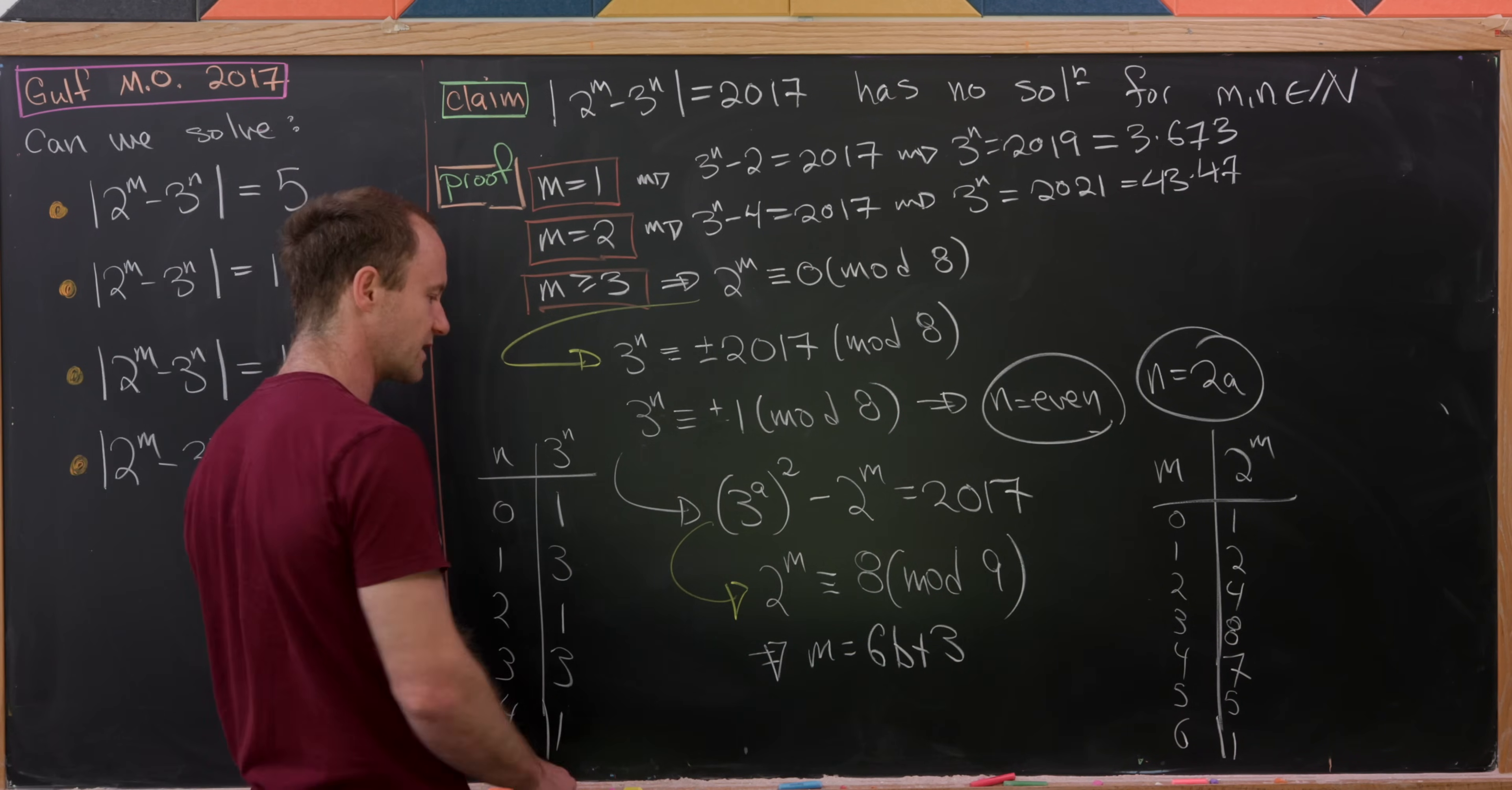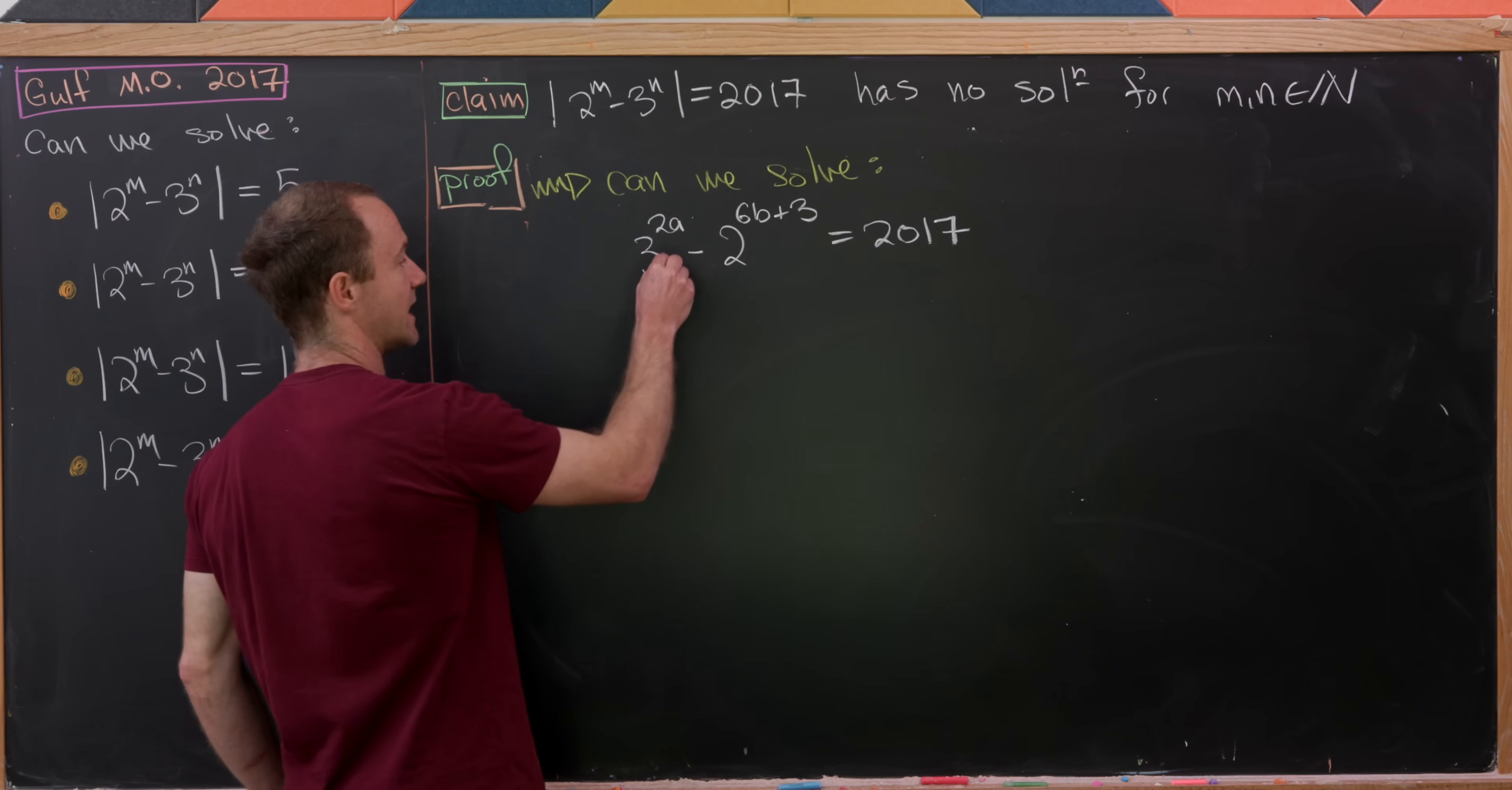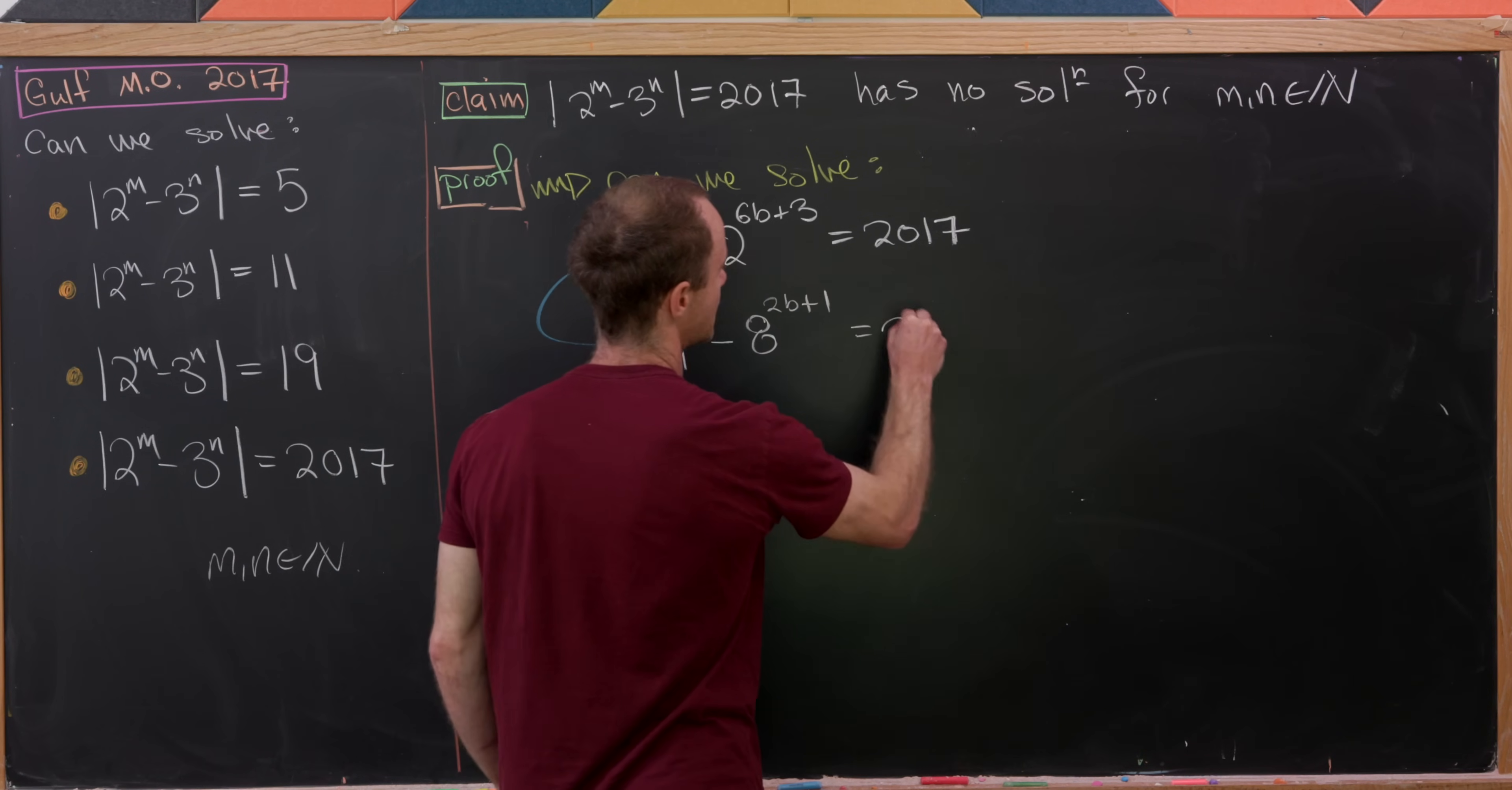Okay so that means we really have a kind of more interesting equation. We have this 3 to the 2a minus 2 to the 6b plus 3 equals 2017. So now let's work on that. So far we've reduced our problem to the following setup. Can we solve 3 to the 2a minus 2 to the 6b plus 3 equals 2017. And I'm going to rewrite this a little bit. I'm going to rewrite this as 9 to the a minus 8 to the power 2b plus 1 equals 2017.